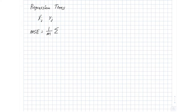The MSE is just our sum over all j's — and there are M of those — of the difference between our true label y_j and the value output by our regression tree, y-hat.